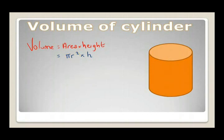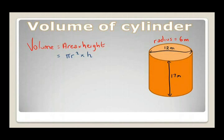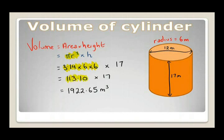Let's look at another example. Here we have a diameter of 12 meters and a height of 17 meters. The radius is half the diameter, which is 6 meters. Substituting: πr² = 3.14 × 6 × 6, times 17. Working this out gives a volume of the cylinder of approximately 1922.65 meters cubed.